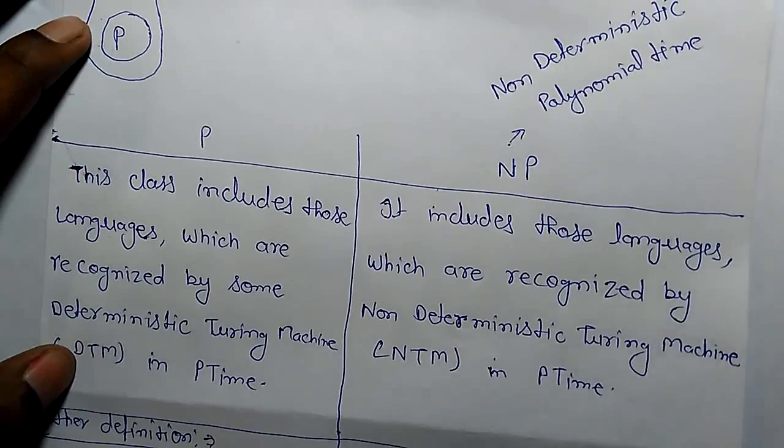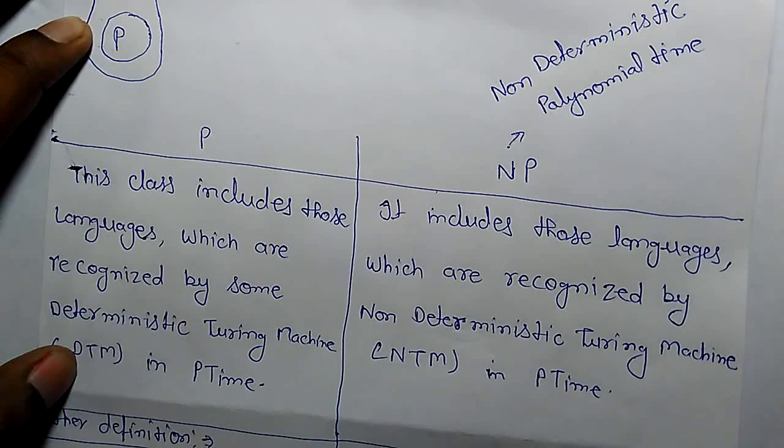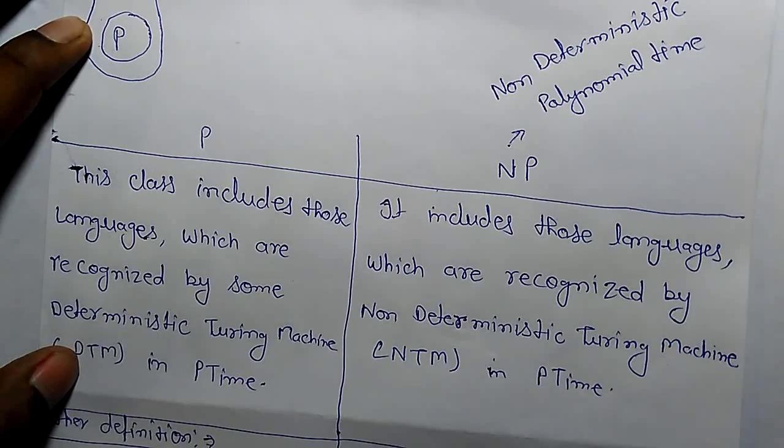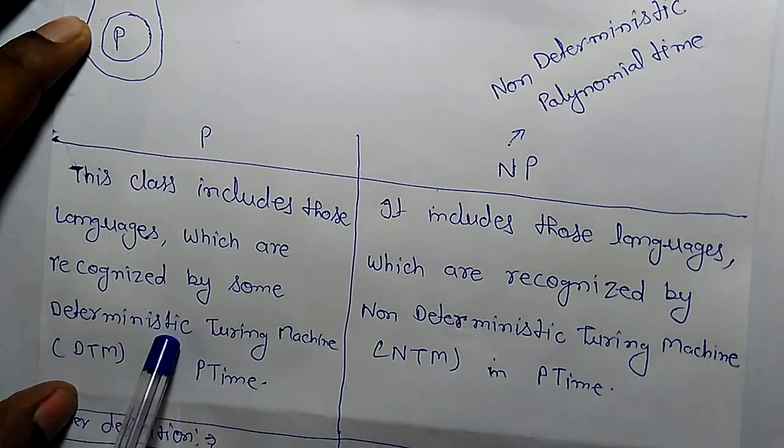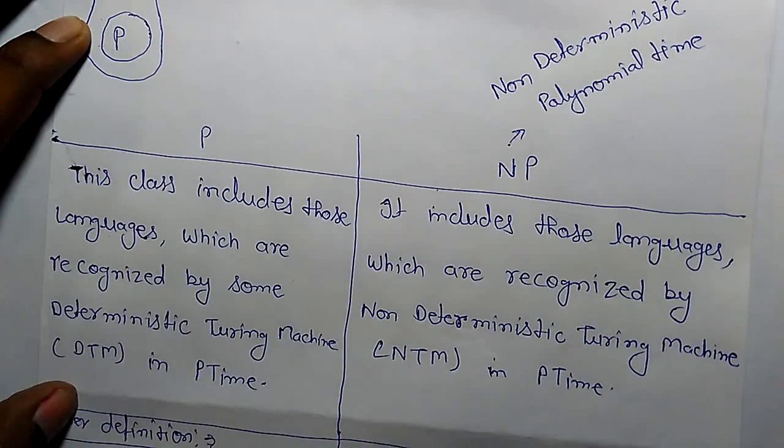So what is NP class? Non-deterministic polynomial time. It includes those languages which are recognized by non-deterministic Turing machine in polynomial time. In P class we use deterministic Turing machine for solving problems. Here we are using non-deterministic Turing machine.